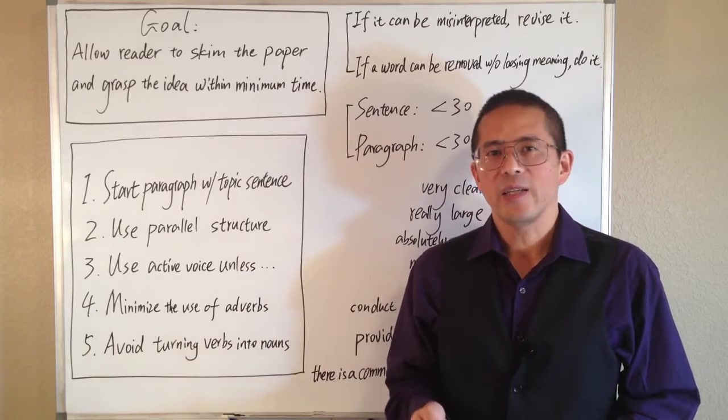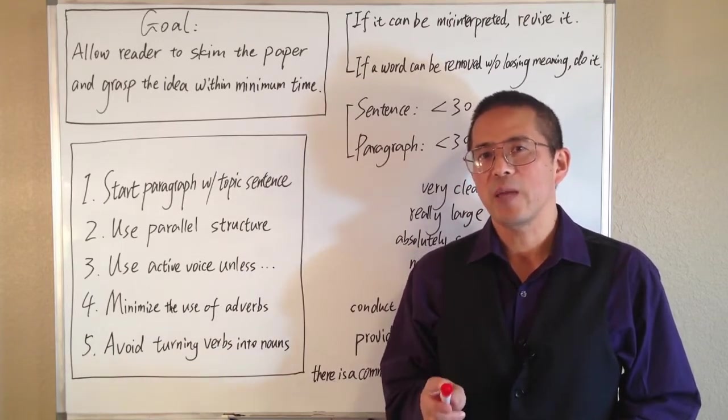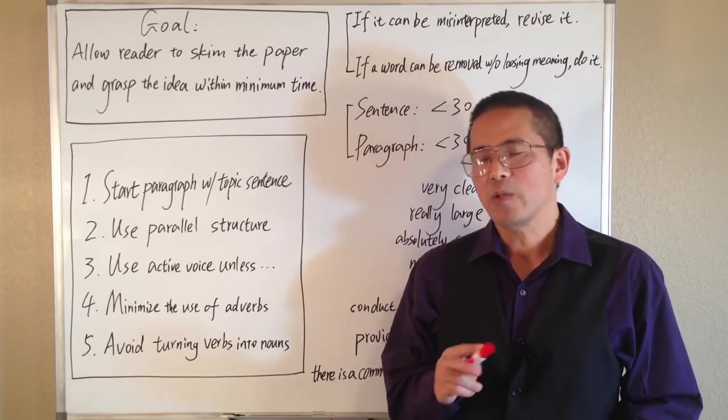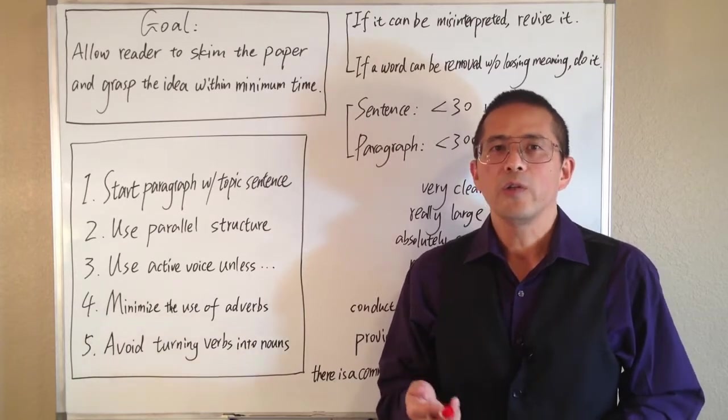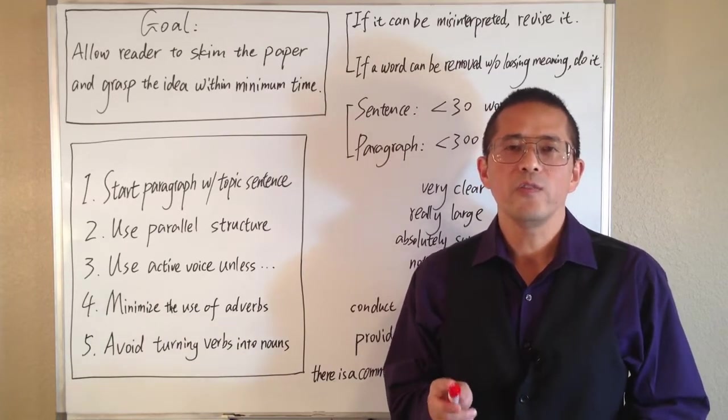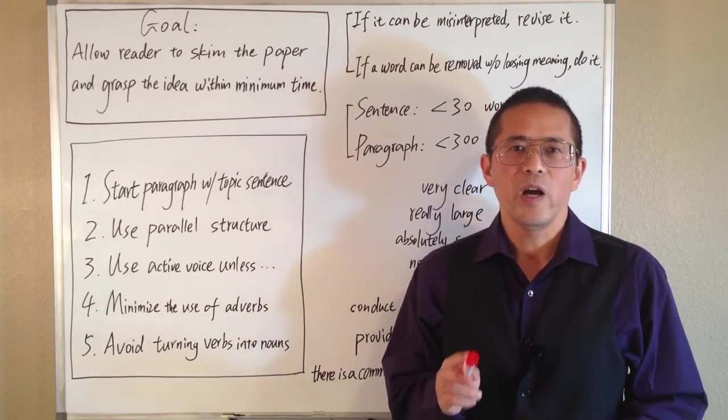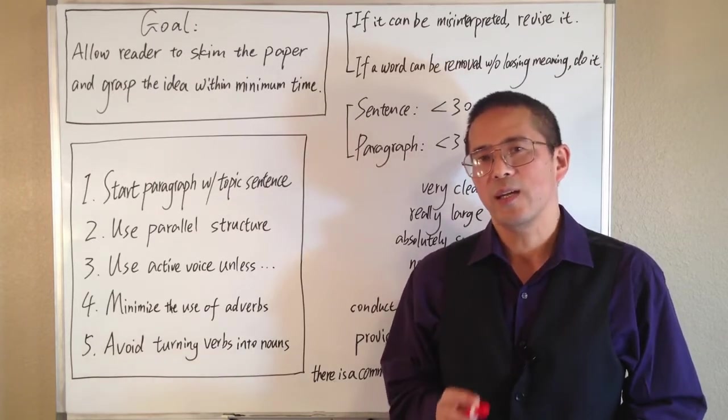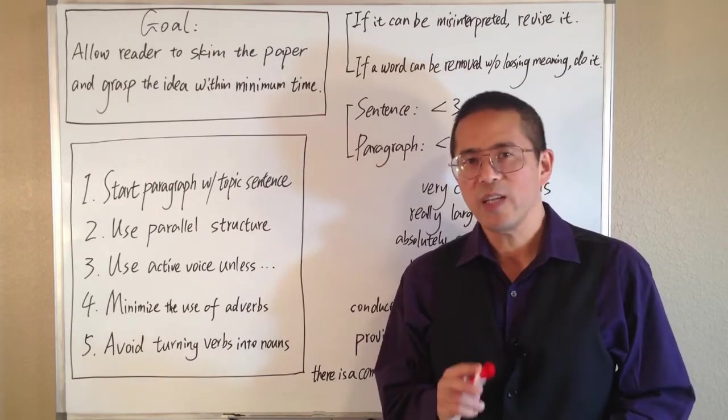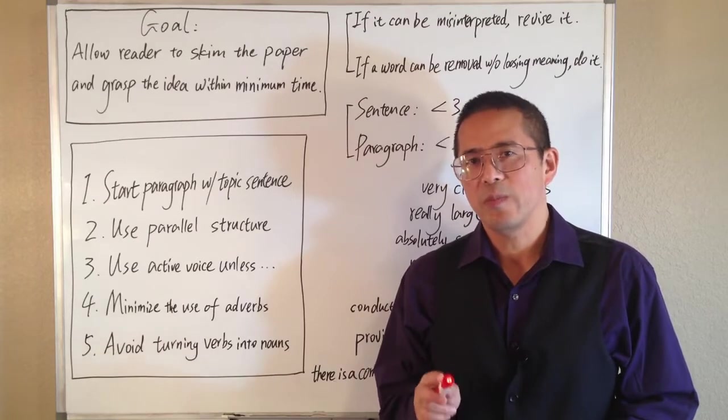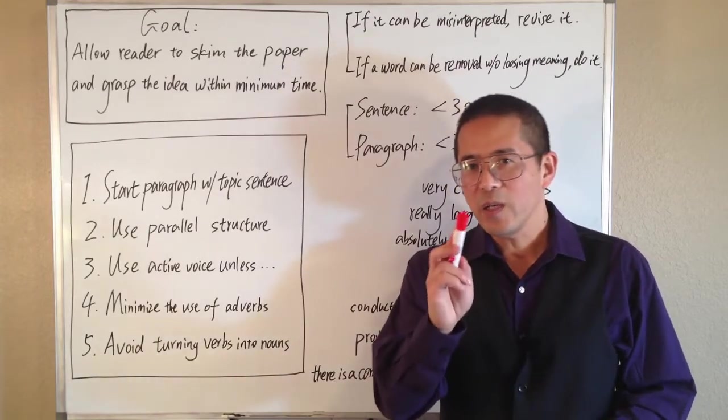Being clear and concise are top priorities for academic writing. In academic writing, our readers are usually professionals who are looking for information for their work. They are not reading for fun or to kill time. Instead, they want to save time and get their job done quickly.